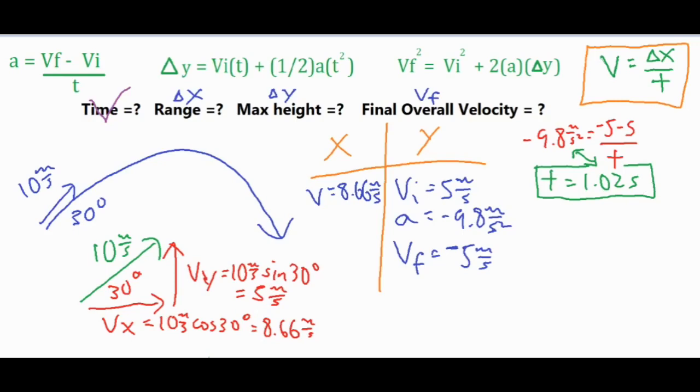Now we're going to find our range. Because time is not a vector, it can be slid into our x column. We have our time of 1.02 seconds, so we can use our constant velocity formula and solve for that delta x. We plugged everything into this formula, basically multiplied by 1.02, and 1.02 times 8.66 is 8.83 meters. That takes care of our range.